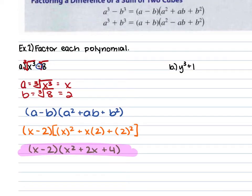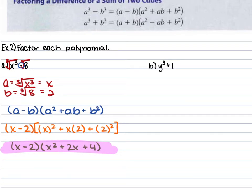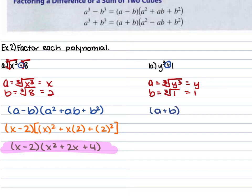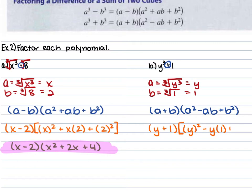For Example 2B, we have y cubed plus 1. Our A is the cube root of y cubed, which is y. Our B is the cube root of 1, which is 1. We have addition between these two terms, so we use the formula A plus B times A squared minus AB plus B squared. Plugging in A equals y and B equals 1, we get y plus 1 times y squared minus y plus 1.